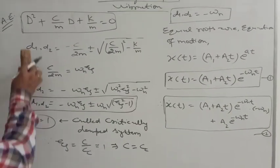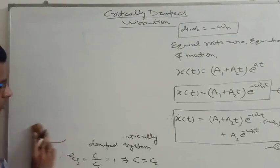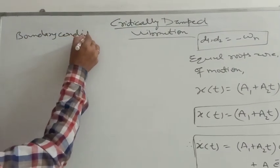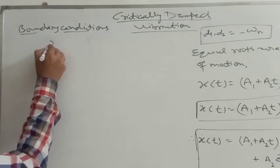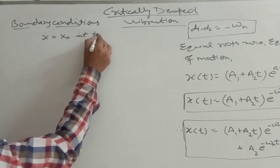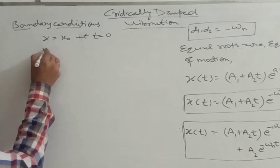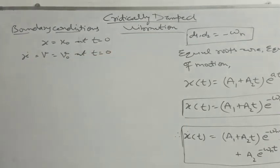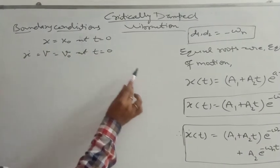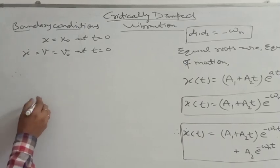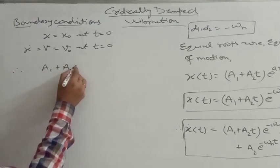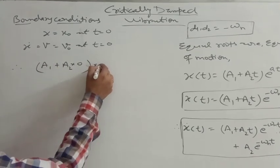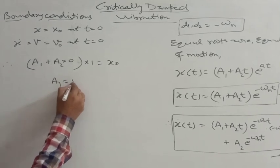Now applying boundary conditions. The two boundary conditions are: at t=0, the displacement x equals x0, and at t=0, the velocity equals v0. Applying the first boundary condition to the displacement equation: at t=0, the exponential term equals 1, so a1 times 1 equals x0, therefore a1 equals x0.